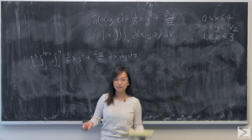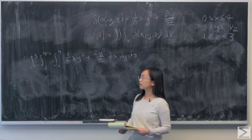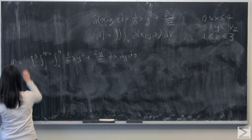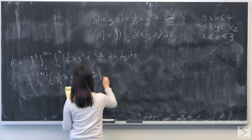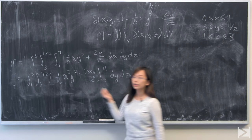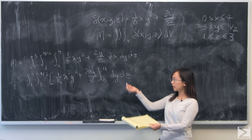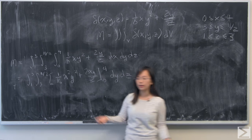I'm going to start by evaluating that first dx. I evaluated that the way you would expect, and I'm going to plug in x equals 4 and then subtract x equals 0.